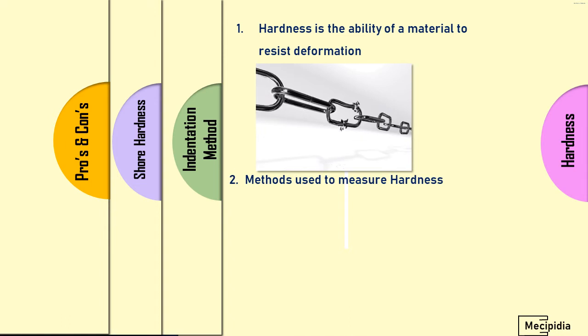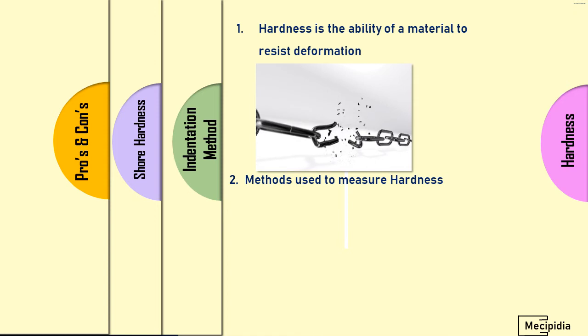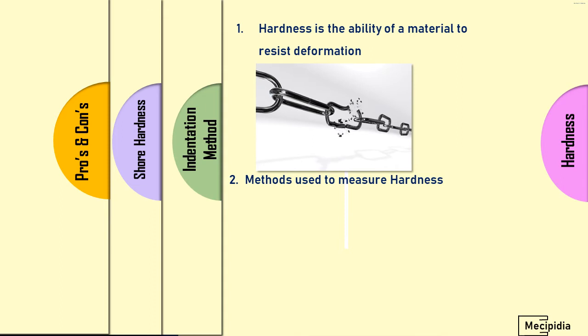Hardness is the ability of a material to resist deformation. If we look at the image, due to the pull it leads to breakage. The resistance created by the chain until the breakage is the hardness of the material. So hardness is the resistance to deformation.